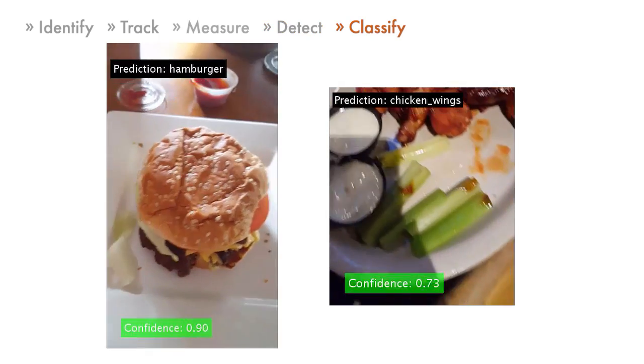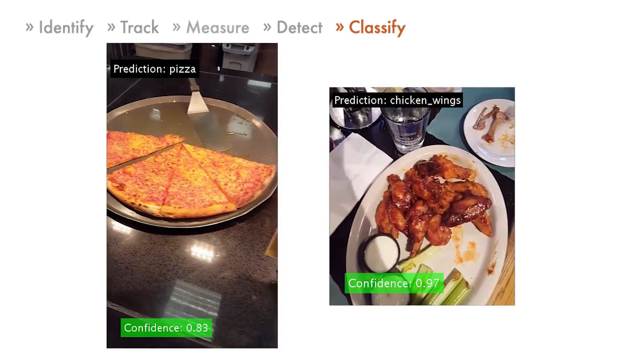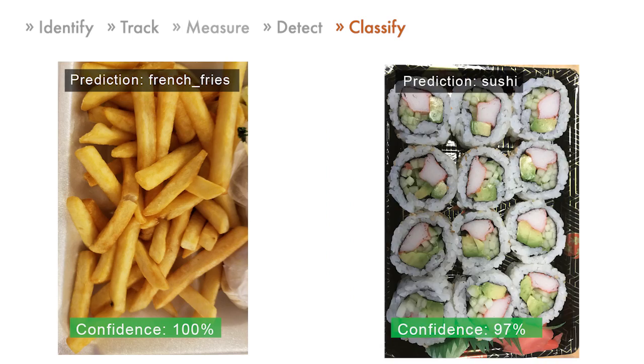You can use machine learning and deep learning techniques to identify or classify objects in a scene. For example, you can train a model to identify images of french fries or sushi.